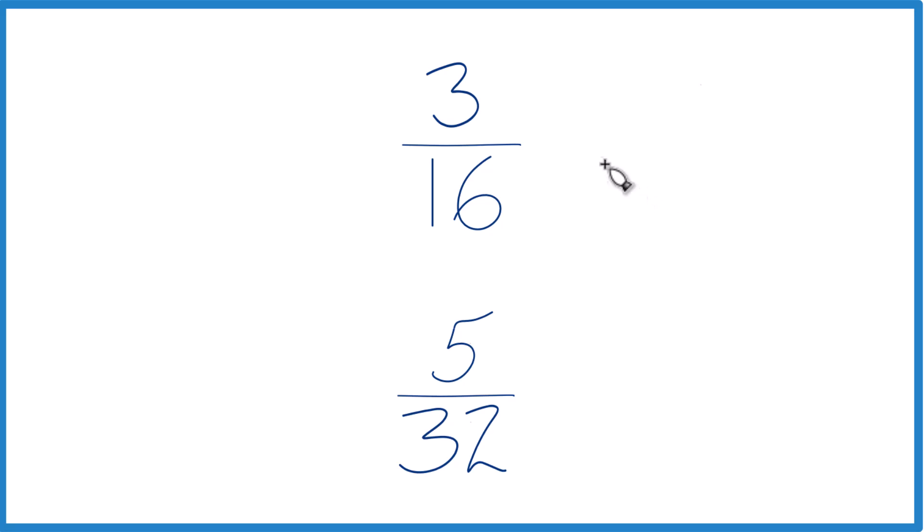You could just on a calculator divide 3 by 16 and get a decimal, 5 by 32 get a decimal, and you'll see that 3/16 is the greater fraction between the two.